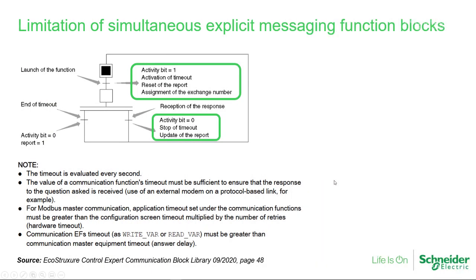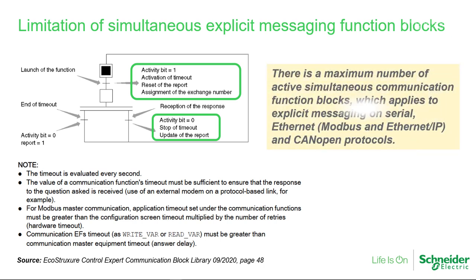One important detail when using explicit messaging is that there is a maximum number of communication function blocks that can be simultaneously active at any given time. This includes the sum of all types of explicit messaging, including Ethernet such as Modbus TCP or Ethernet IP, as well as CANopen or Modbus serial communication. You might need to add logic to control how many function blocks are triggered, and monitor an activity bit to avoid exceeding the communication buffer of the CPU.